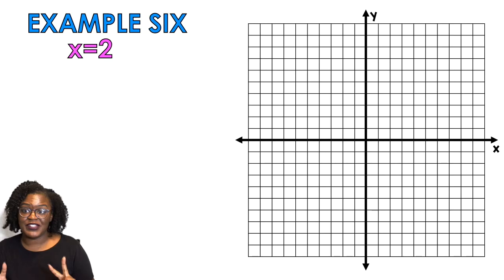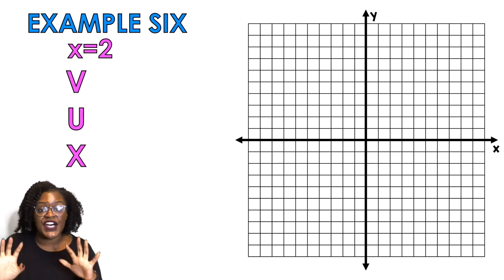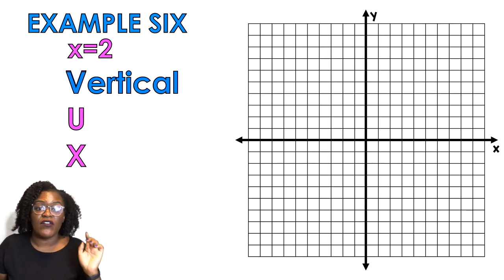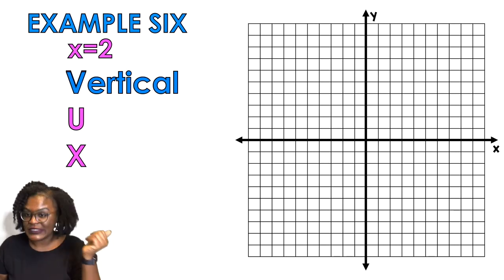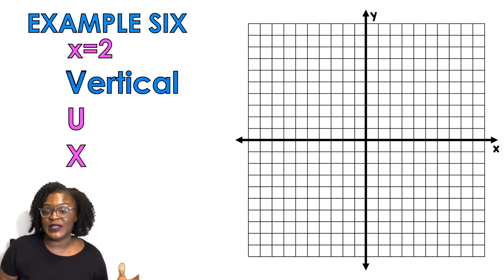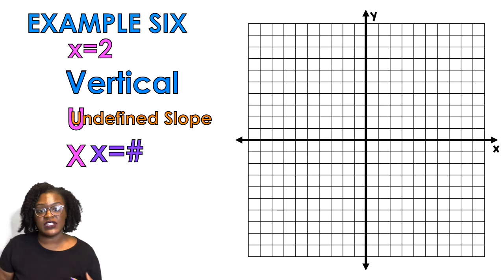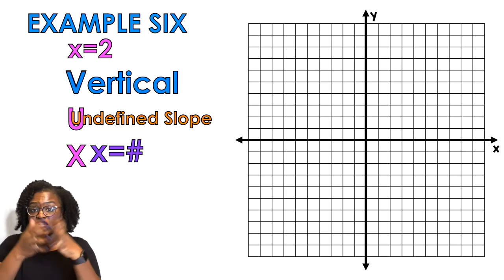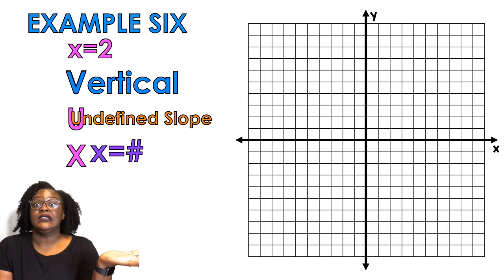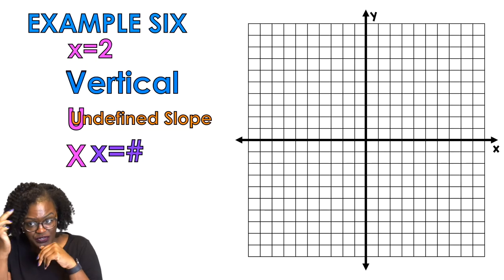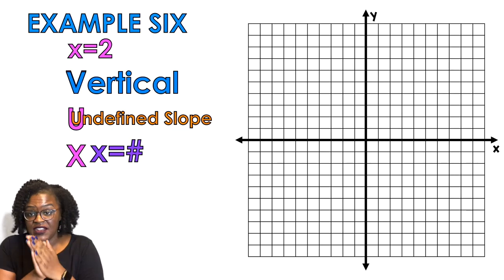Then we have our second special case line. So this is just x equals a number, so I use the term VUX. Vertical line, undefined slope, and x equals a number. Anytime I see an equation, because look at that equation, you don't got no y in it, right, it just has an x. Oh my goodness. So that should automatically trigger my brain and tell my brain, oh if this equation is just x and a number that means it's a vertical equation. And so I'm gonna go to the x-axis and I'm gonna find a two on the x-axis.